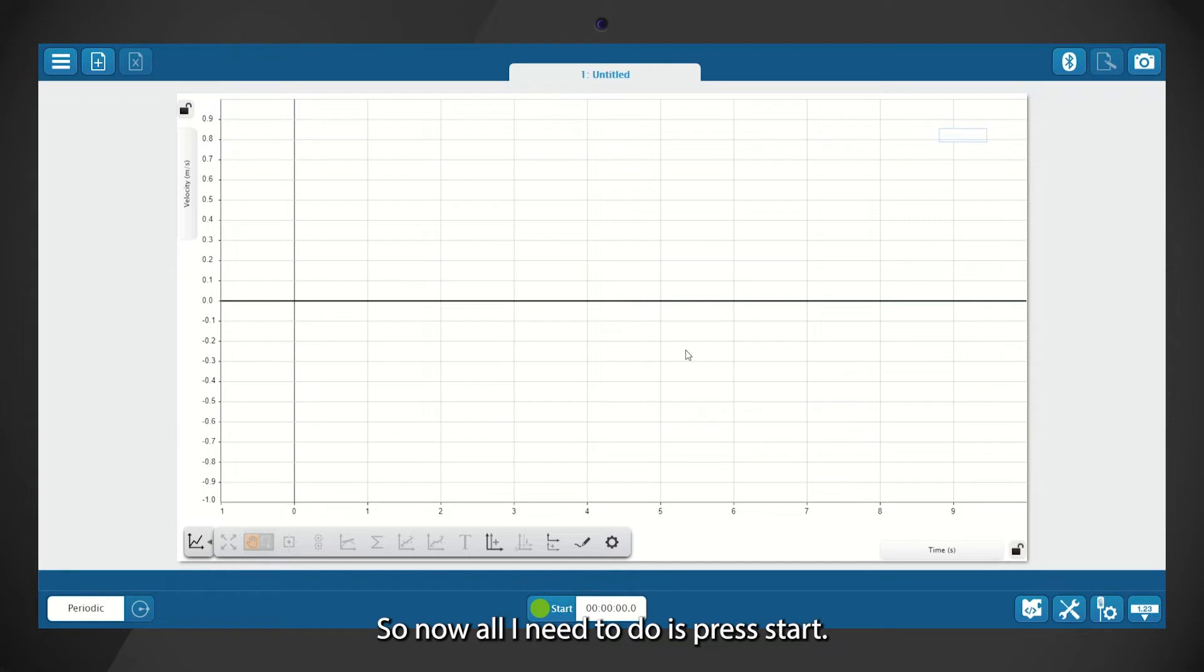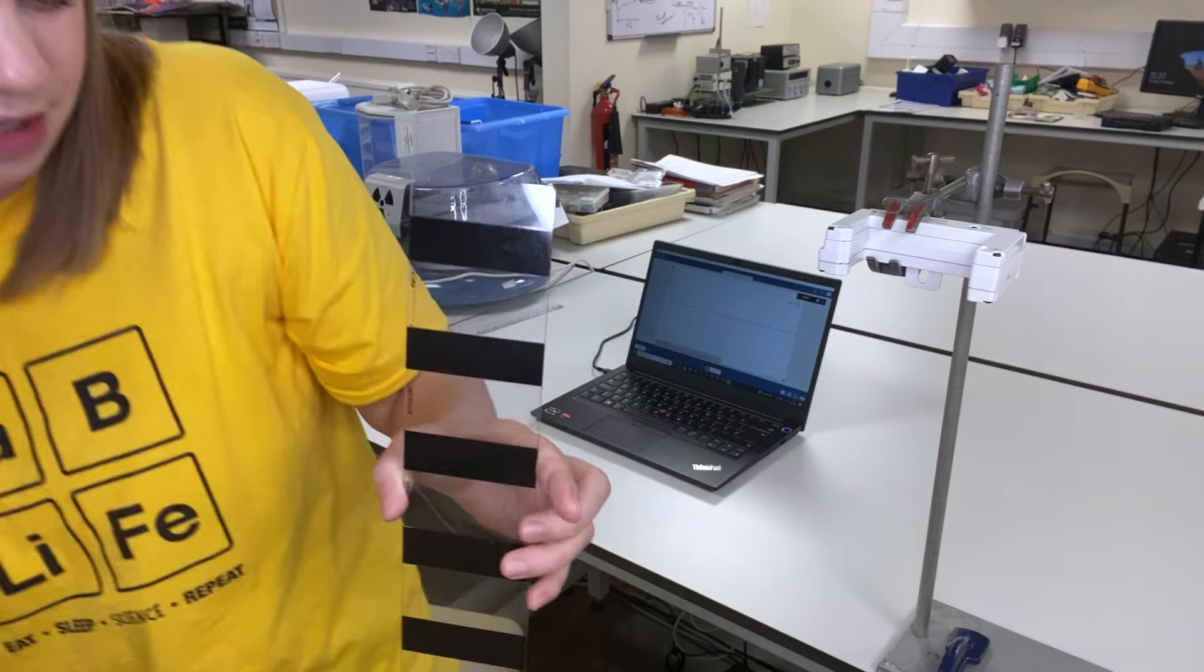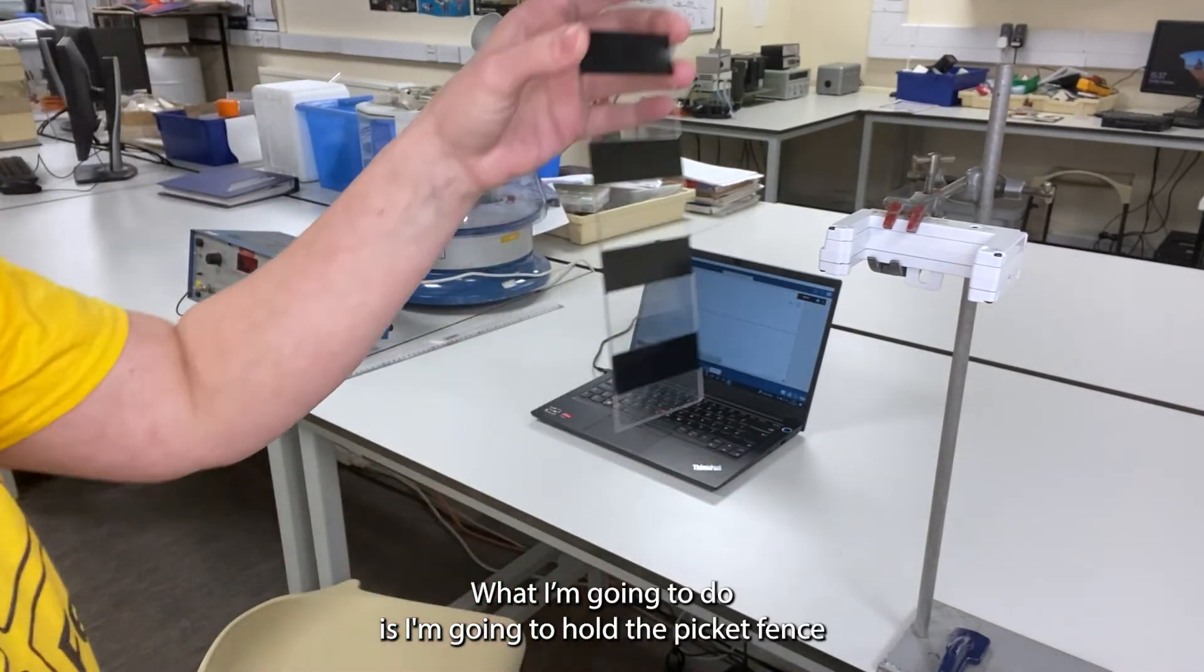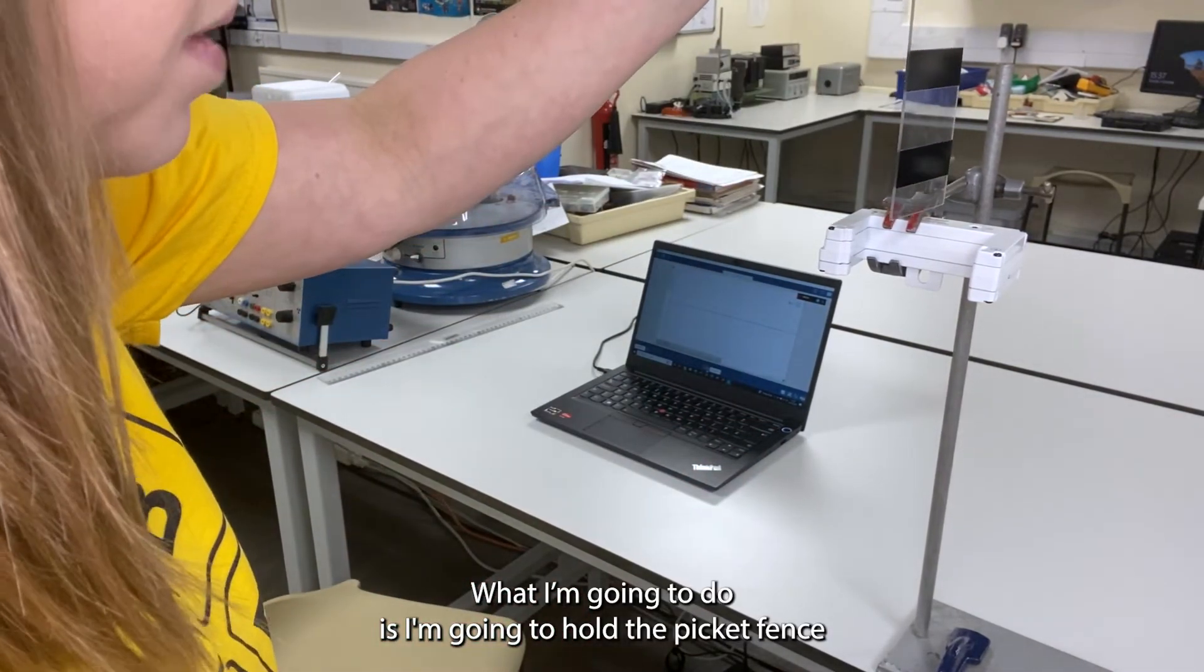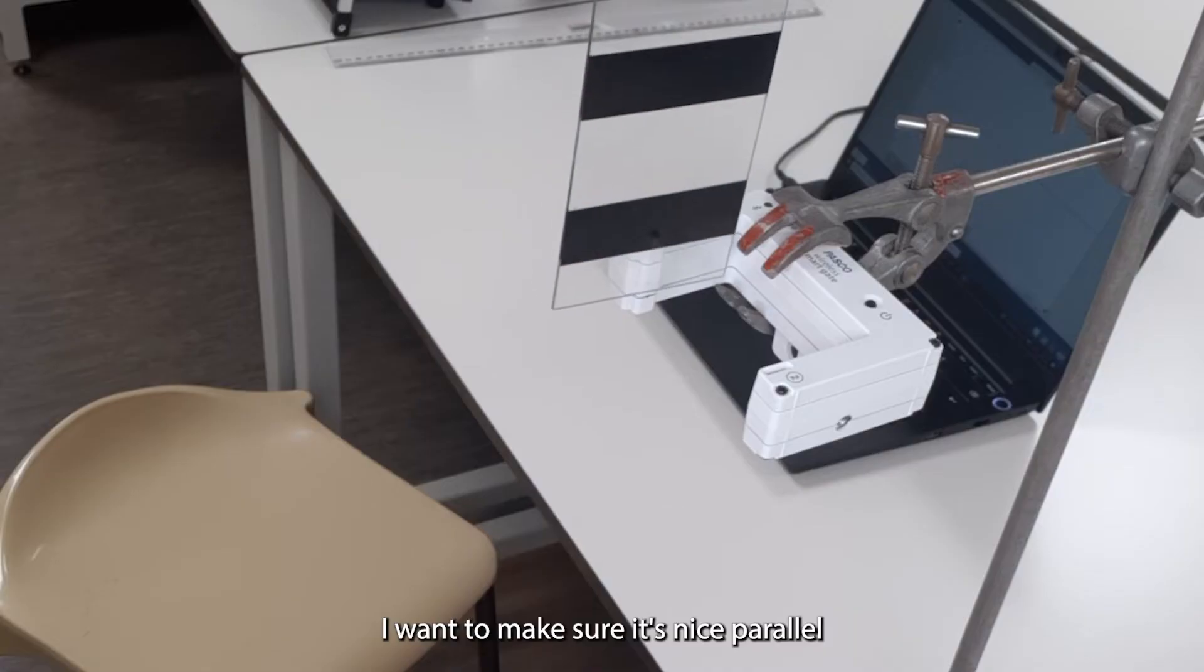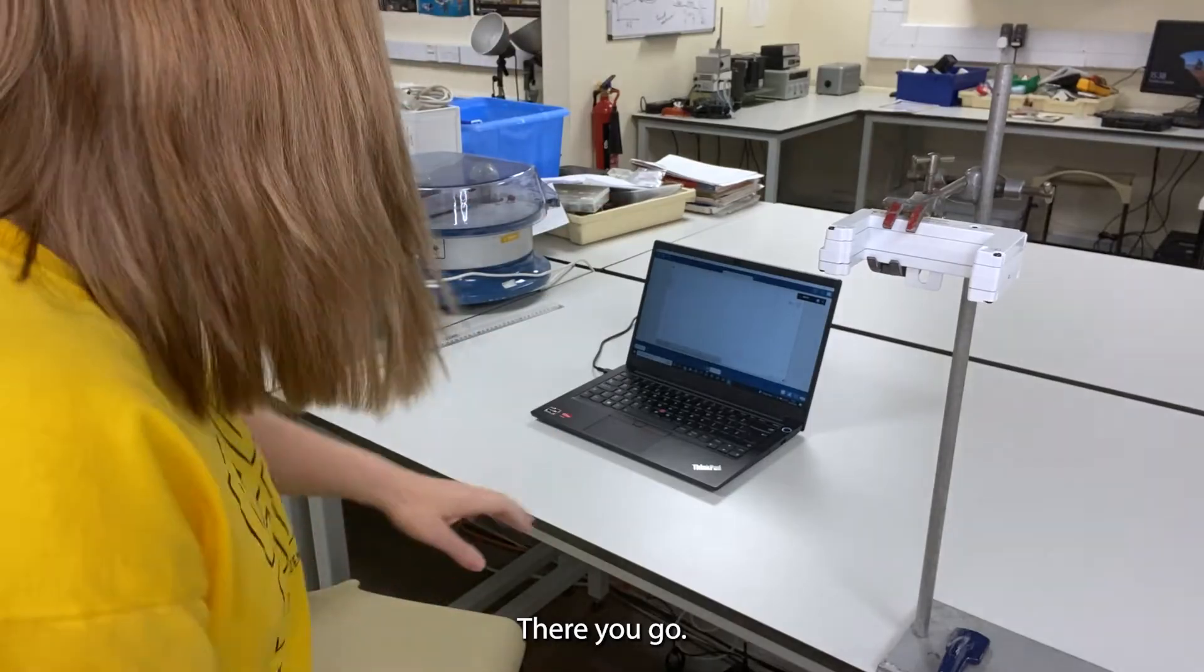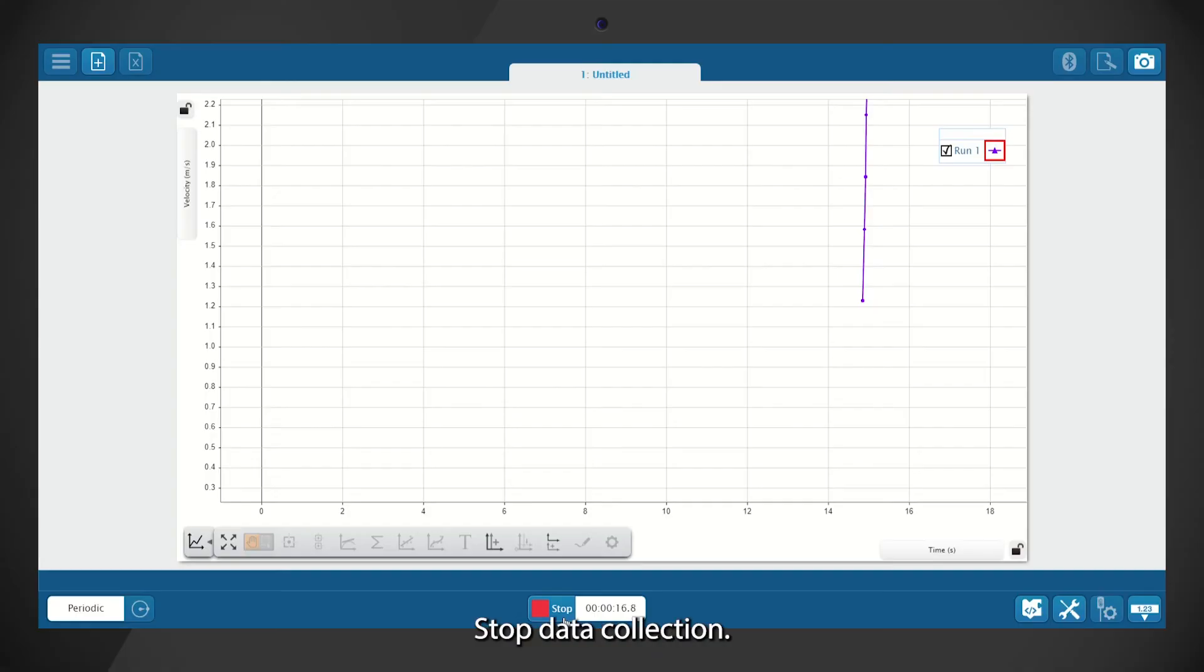So now all I need to do is press start. It doesn't matter if you've got a lag at the beginning of your data collection. What I'm going to do is I'm going to hold the picket fence above the gate and then I'm just going to drop it through. I want to make sure it's nice and parallel.